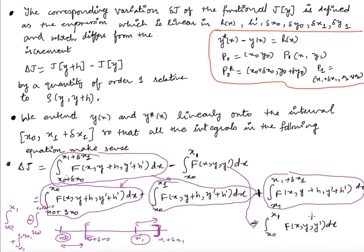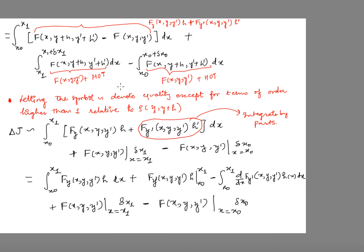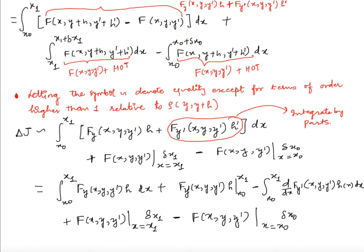Now we will combine the first two integrals. We get the integral from x₀ to x₁ of [f(x, y + h, y' + h') minus f(x, y, y')] dx, and we still have the boundary terms from x₁ to x₁ plus δx₁ and minus the term from x₀ to x₀ plus δx₀. The symbol δ means we are only taking linear terms, ignoring terms of order higher than one.